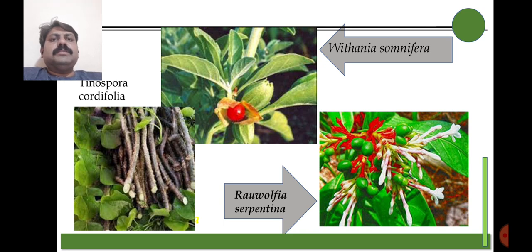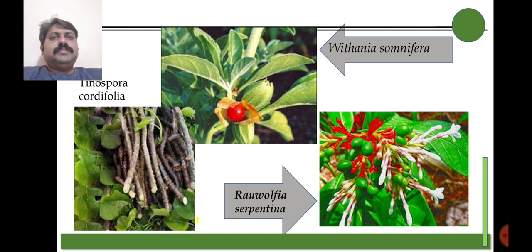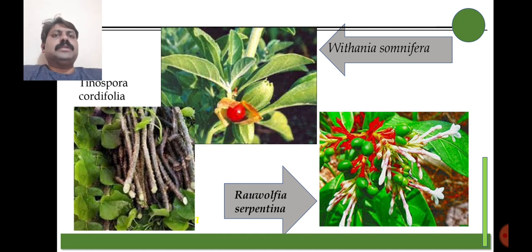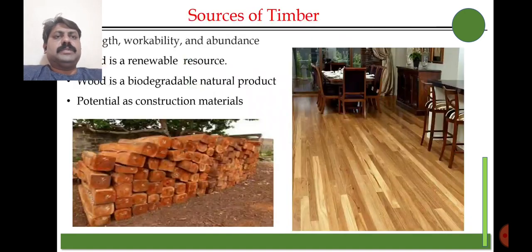Additional species with medicinal importance include Tinospora cordifolia, Withania somnifera — that is Ashwagandha — and Rauvolfia serpentina — that is Sarpagandha. Plants are important sources that produce different types of medicines, and these are some of the species with medicinal properties.